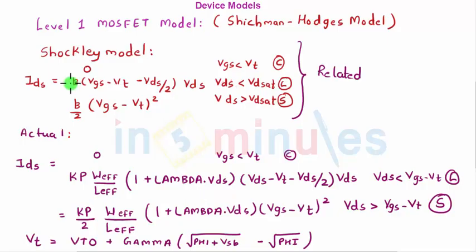Also notice that the beta where it was in Shockley's model is replaced by KP W effective into L effective where KP is a model parameter. The model is saying it as KP but technically for us we have to understand that KP is KN because it's an NMOS. KN dash which is mu N COX. So KP will take into consideration the mobility of your electrons and the COX.